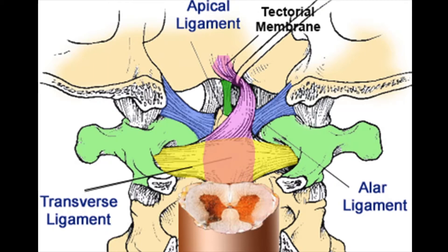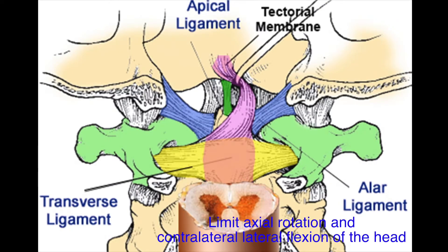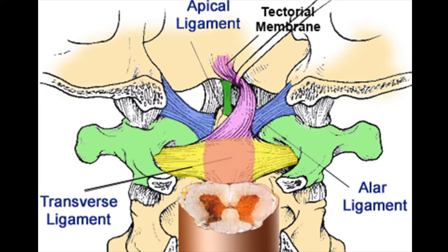These ligaments lie on either side of the apical ligament. The alar ligaments are strong paired ligaments which limit axial rotation and contralateral lateral flexion of the head. They are the primary stabilizers of the atlanto-axial joint in conjunction with the transverse band of the cruciform ligament.